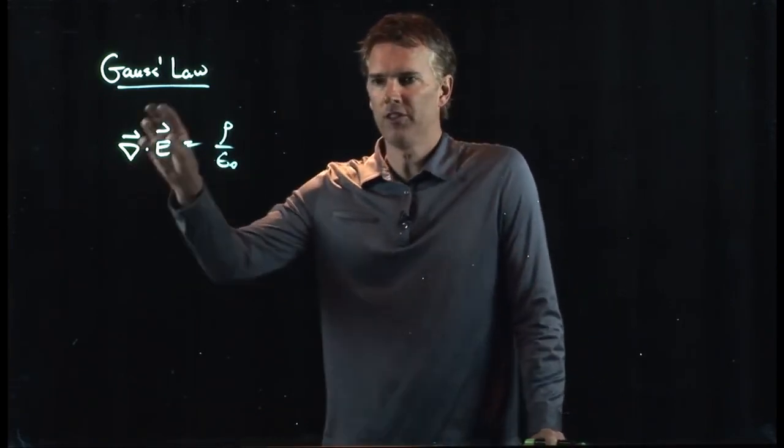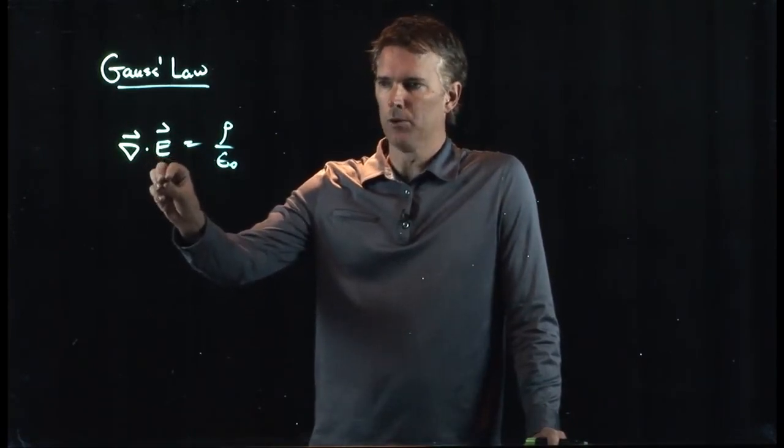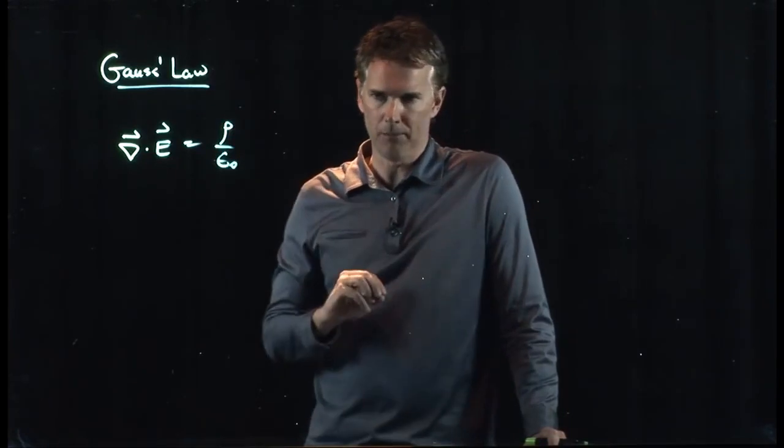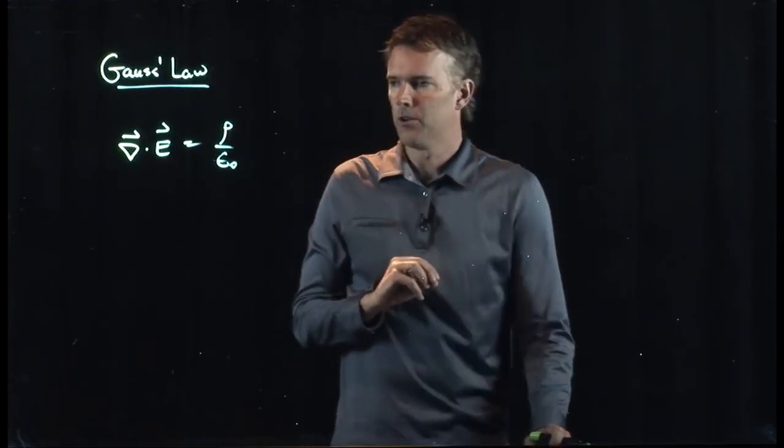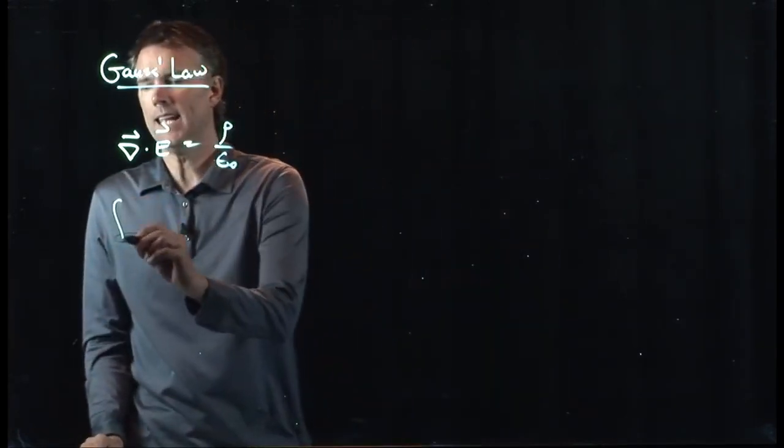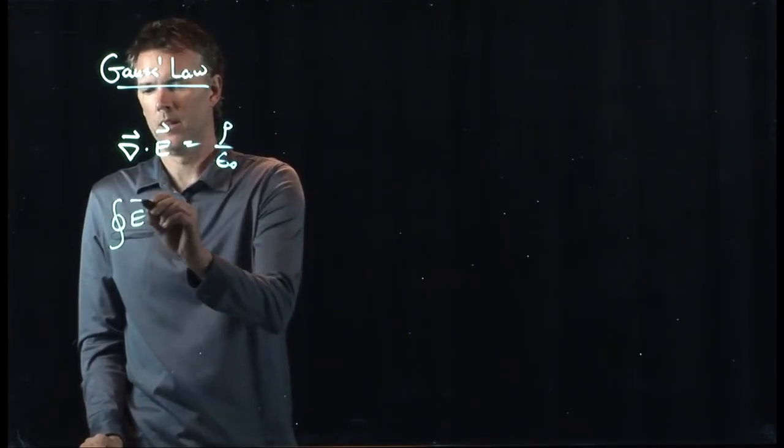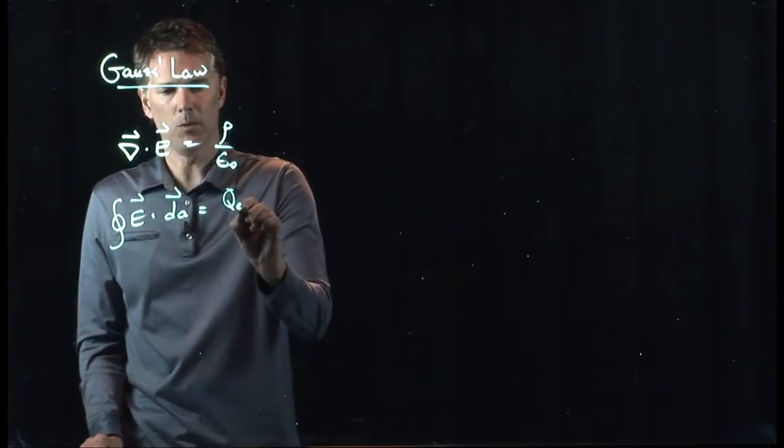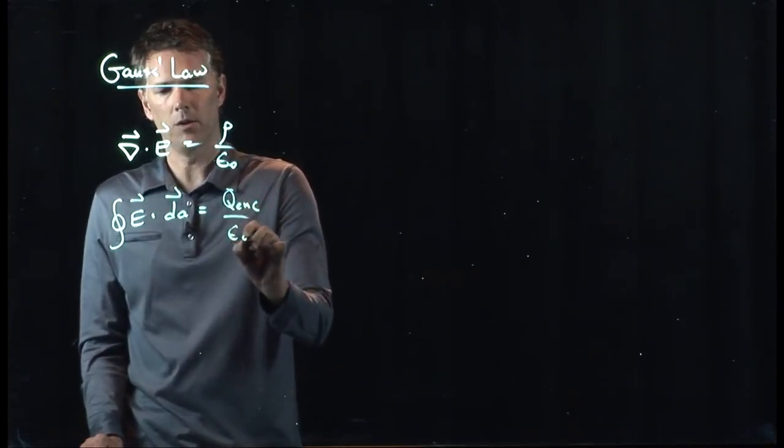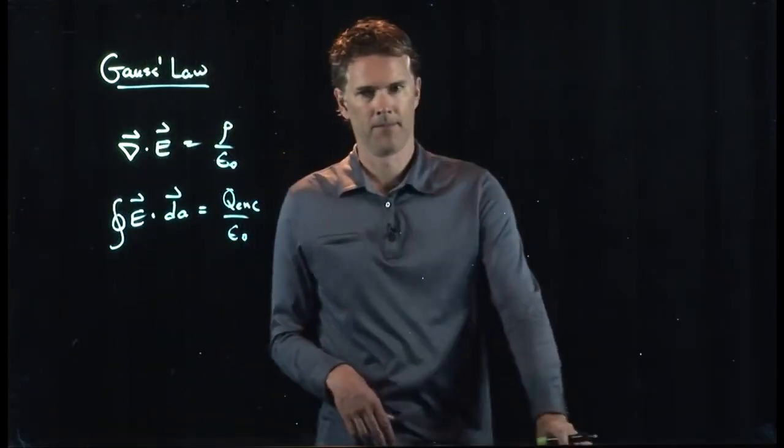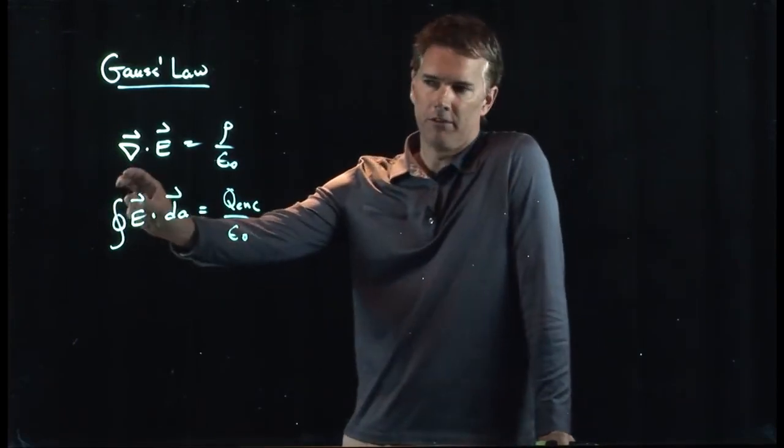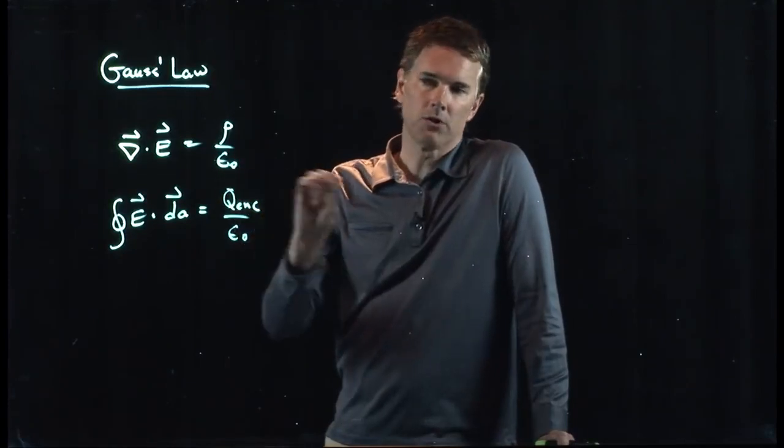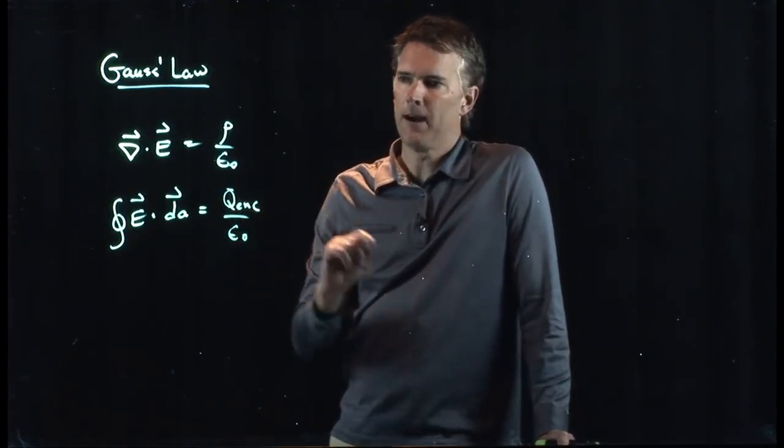This says the divergence of the E field is equal to the charge density rho divided by epsilon naught. You can also write this in integral form. Integral of E dot dA equals q enclosed over epsilon naught. That is a closed surface integral of E. It's equal to how much charge is enclosed divided by epsilon naught.